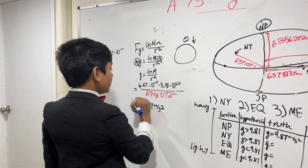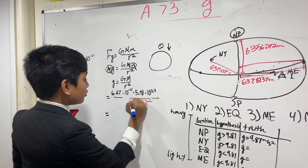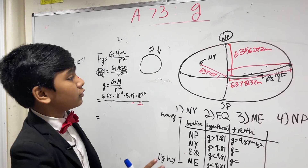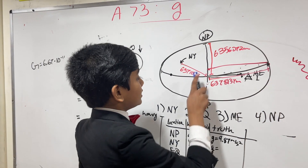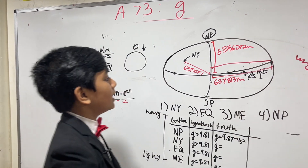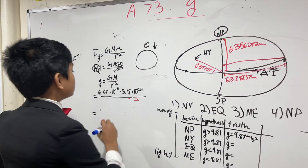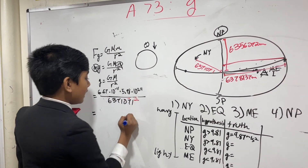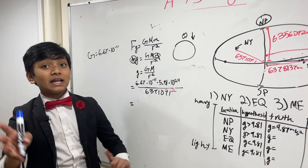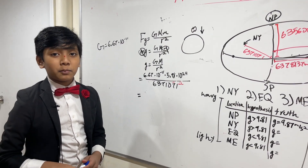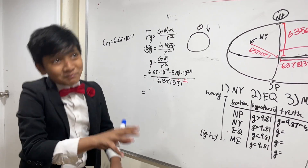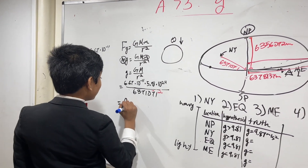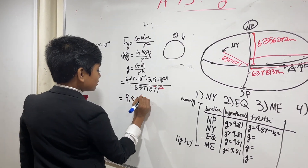What about New York? Here we just have to substitute in a new value for the radius. Our New York value — and we're using the same average value for this — is 6,371,071. And doing that, let me spit out a magical answer: I got 9.84 meters per second squared.